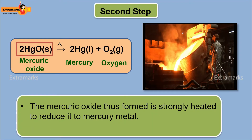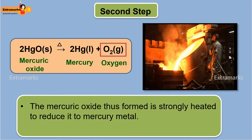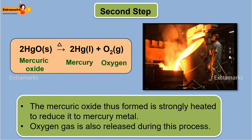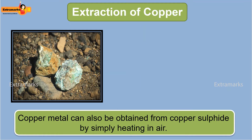The mercury oxide thus formed is then strongly heated to reduce it to mercury metal. Oxygen gas is also released during this step. Similarly, copper metal can also be obtained from copper sulfide by simply heating in air.